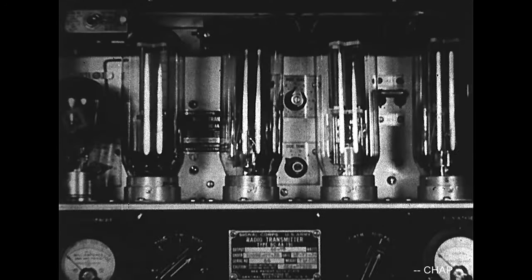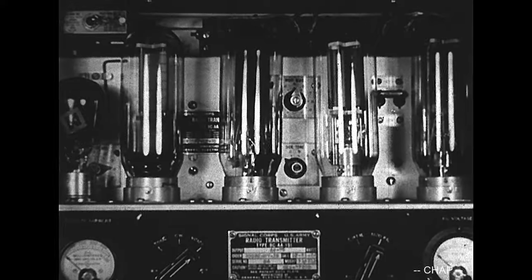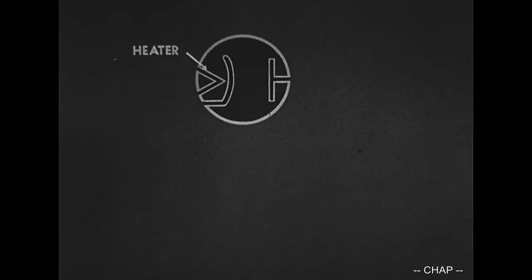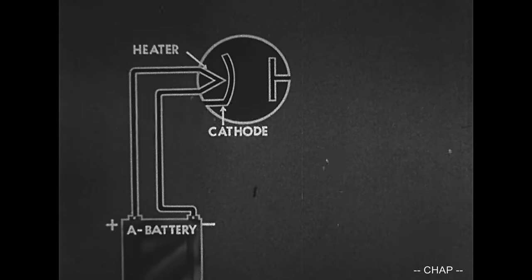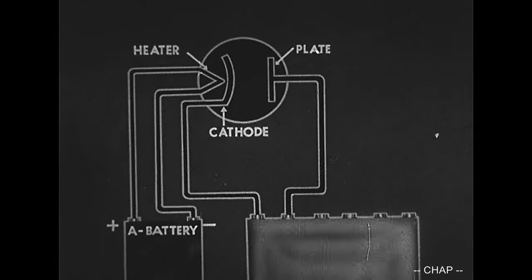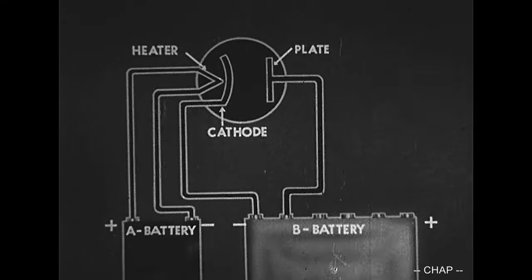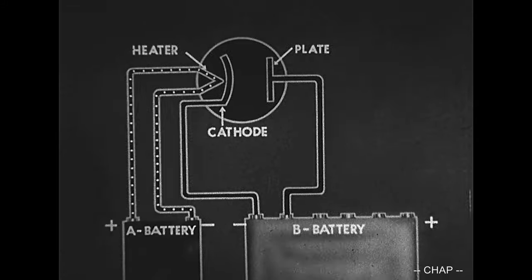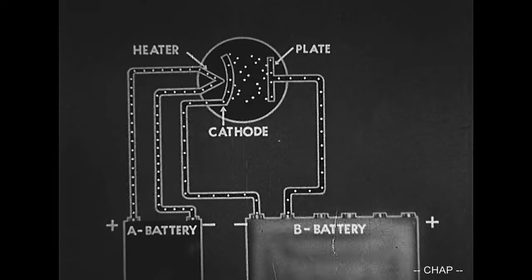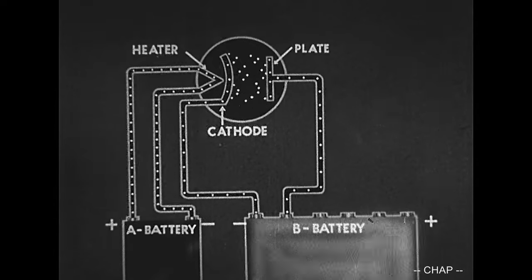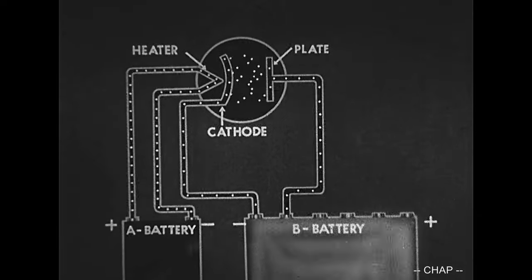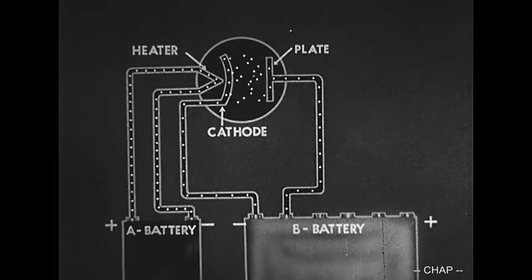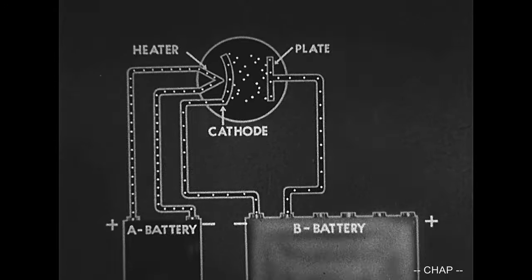Vacuum tubes are made in a variety of sizes and corresponding capacities. In an experimental circuit, the heater of the tube is attached to a storage or A battery. The cathode and plate are connected to a B battery so that the plate is positively charged. The A battery current heats the cathode, which in turn gives off electrons. A current flows from cathode to plate and around through the B battery back to the cathode and across to the plate again. This is plate current.